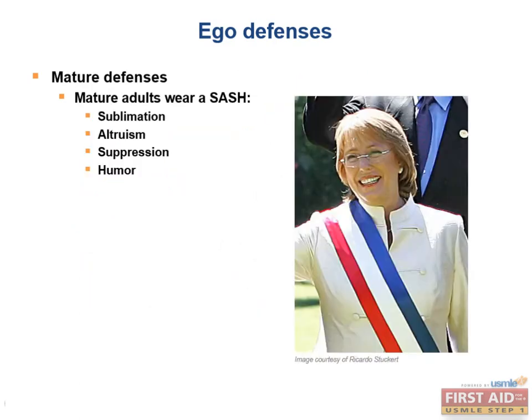There are also the mature defense mechanisms. These are thought to be the less primitive defense mechanisms and are seen as more mature ways of dealing with unacceptable thoughts or feelings. They can be remembered with the mnemonic 'mature adults wear a SASH,' which stands for sublimation, altruism, suppression, and humor.